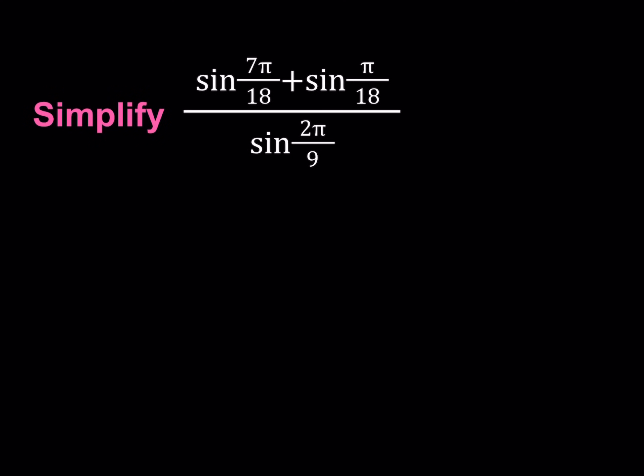Hello everyone. In this video, we're going to be simplifying a trigonometric expression. We have sine 7π over 18 plus sine π over 18, all divided by sine 2π over 9, and we're going to be simplifying this expression.